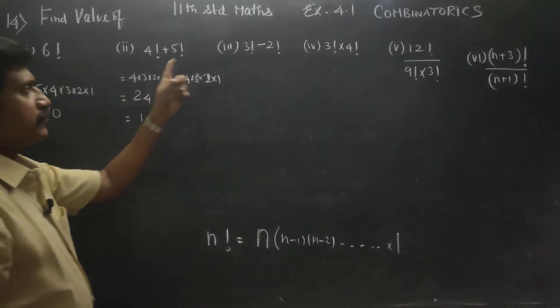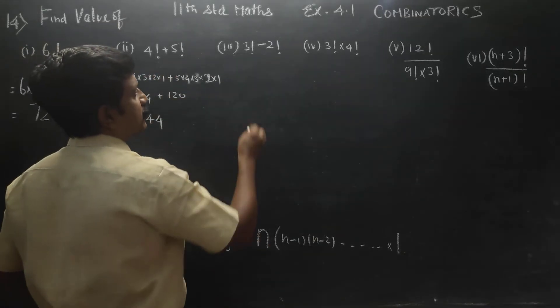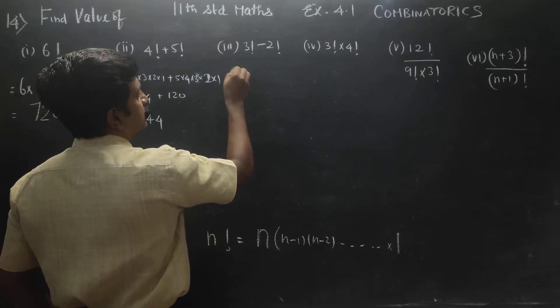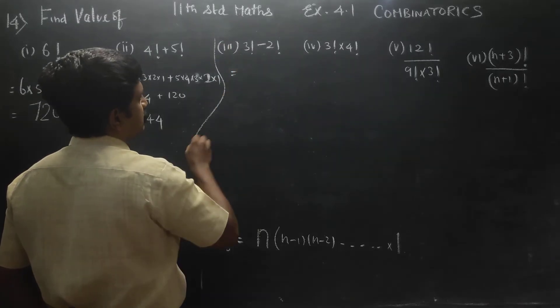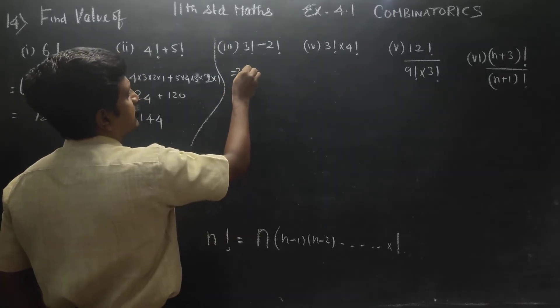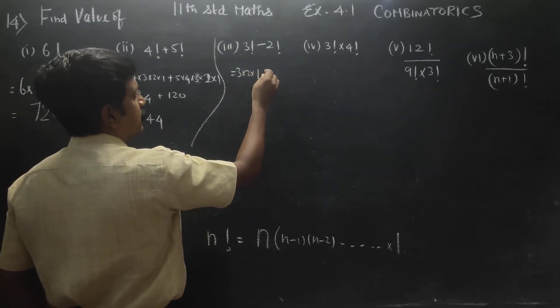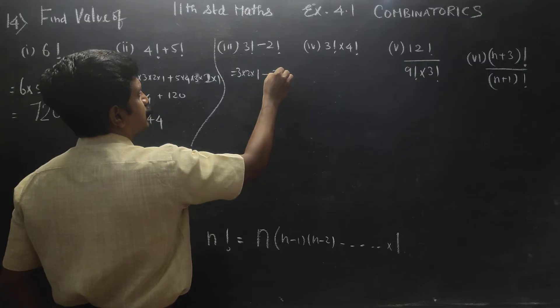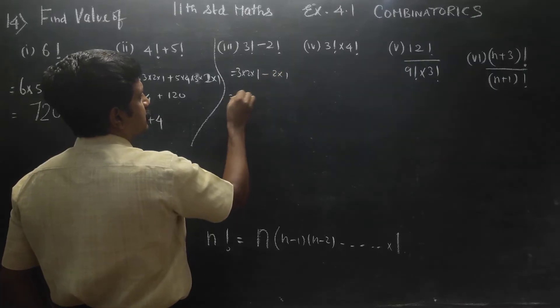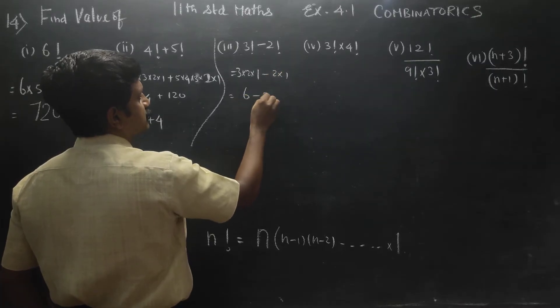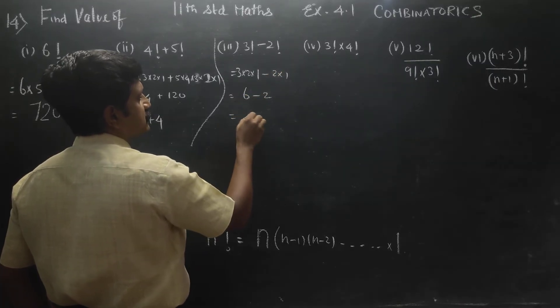3 factorial minus 2 factorial. 3 factorial is 3 into 2 into 1, minus 2 into 1. This is 6 minus 2, so your answer is 4.